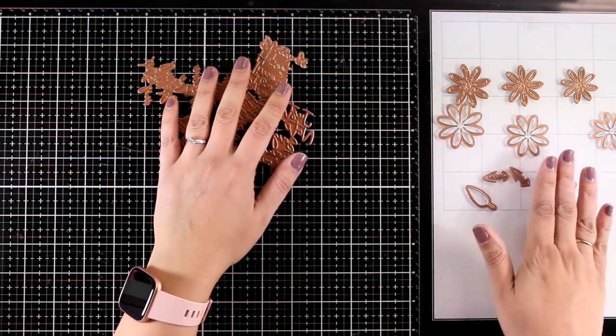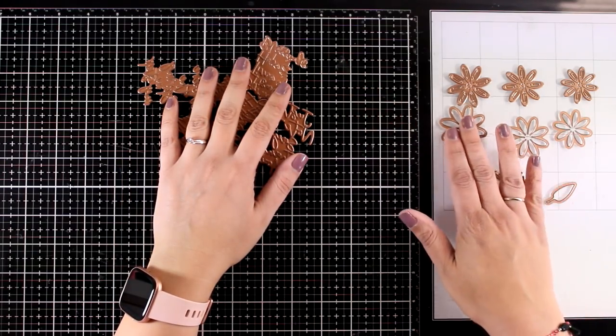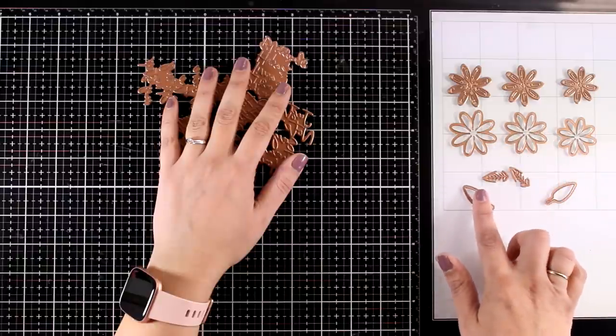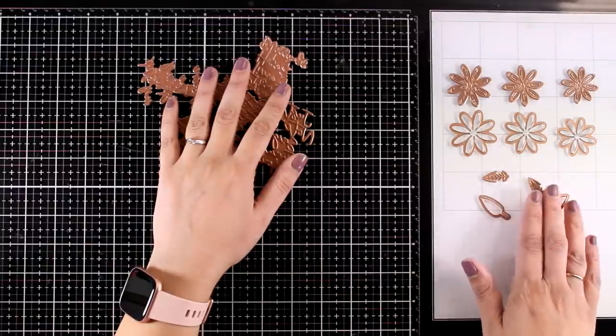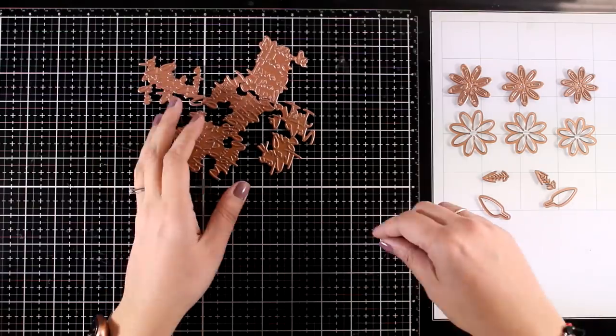And to embellish my card I'm going to create flowers. I will be using this daisy set by Spellbinders. It includes plates for foiling for the flowers and the leaves as well as the dies to cut them out.